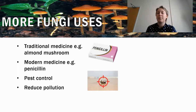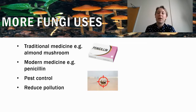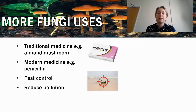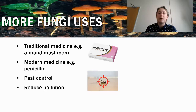We can also use fungi as pest control. Growing specific species of mushrooms can discourage certain insects, such as grasshoppers, from eating your plants or crops — which is really useful and saves a lot of time and money. There's also research on using fungi to reduce pollution, as mushrooms are particularly good at taking in chemicals around them and breaking them down into natural elements, especially with metals like lead, which is a common pollutant.